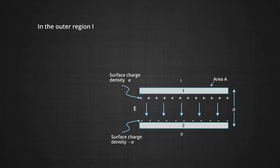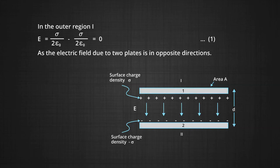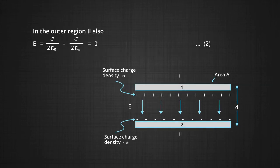Now, in the outer region 1, which is above plate 1 in the diagram, the electric field E is equal to sigma upon 2 epsilon naught minus sigma upon 2 epsilon naught, so the result comes out to be 0, because the electric field due to the two plates is in the opposite direction. Now, in region 2, which is below plate 2, we also see E is equal to sigma upon 2 epsilon naught minus sigma upon 2 epsilon naught, which again comes out to be 0, because the two fields are in the opposite direction.